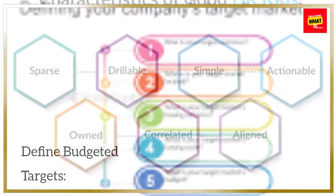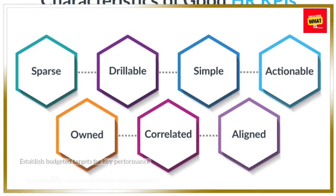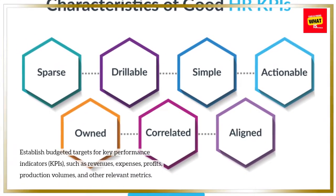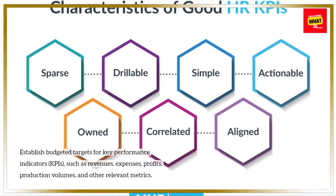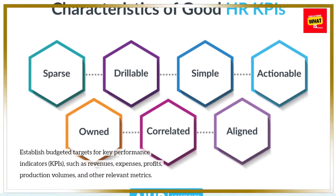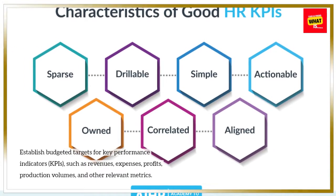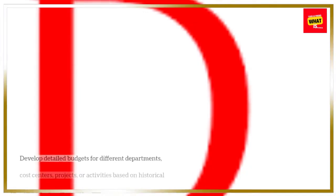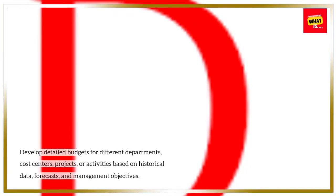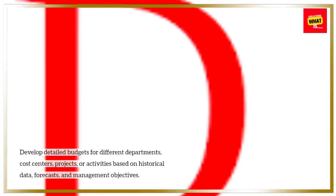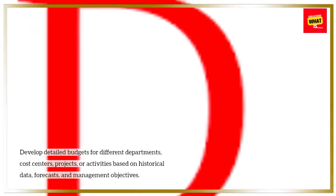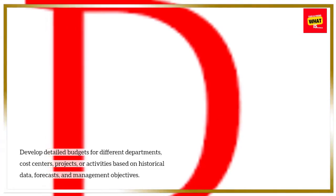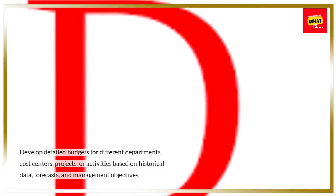Define budgeted targets. Establish budgeted targets for key performance indicators (KPIs) such as revenues, expenses, profits, production volumes, and other relevant metrics. Develop detailed budgets for different departments, cost centers, projects, or activities based on historical data, forecasts, and management objectives.